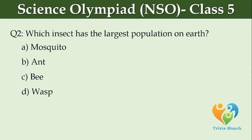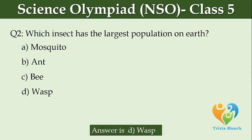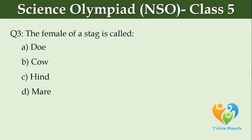The female of a stag is called dash. Option A: doe, Option B: cow, Option C: hind, Option D: mare.